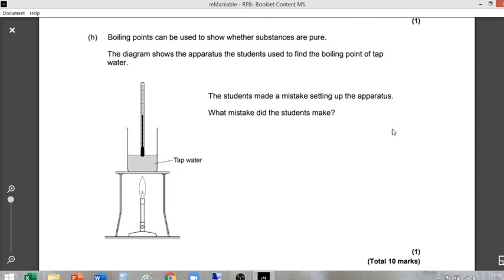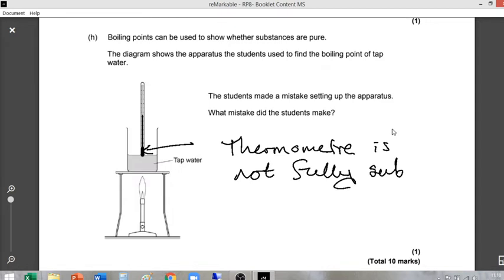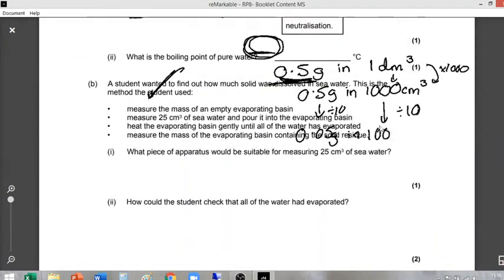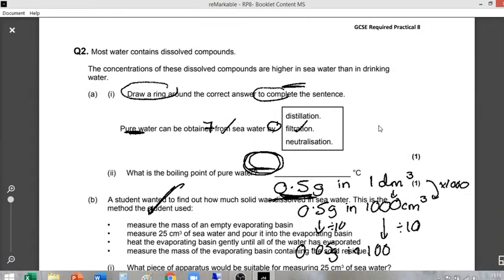What mistake did the student make? Well, that thermometer there is not going to record that temperature particularly well, is it? It's not all the way in the water. Therefore, it's not going to get a decent reading. So thermometer is not fully submerged. So it's not all the way in the water, it's not going to measure the temperature correctly.